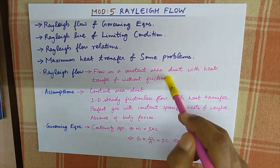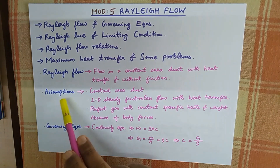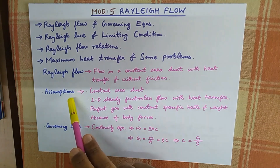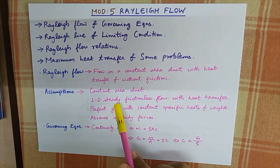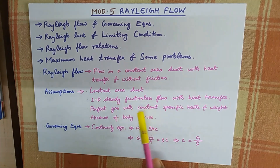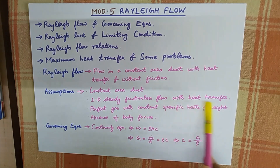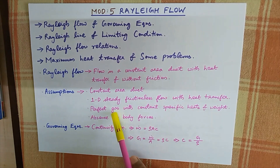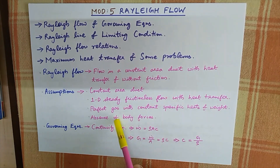Rayleigh Flow is just the opposite of Fanno Flow. The assumptions for Rayleigh Flow are: constant area duct, one dimensional, steady, frictionless flow with heat transfer, perfect gas with constant specific heats and molecular weight, and absence of body forces.